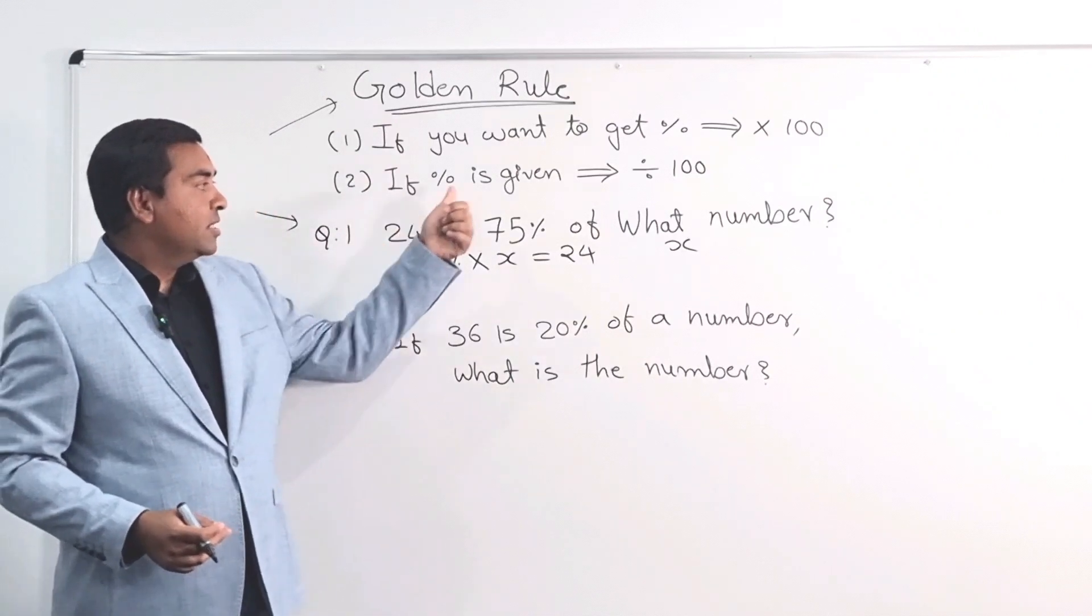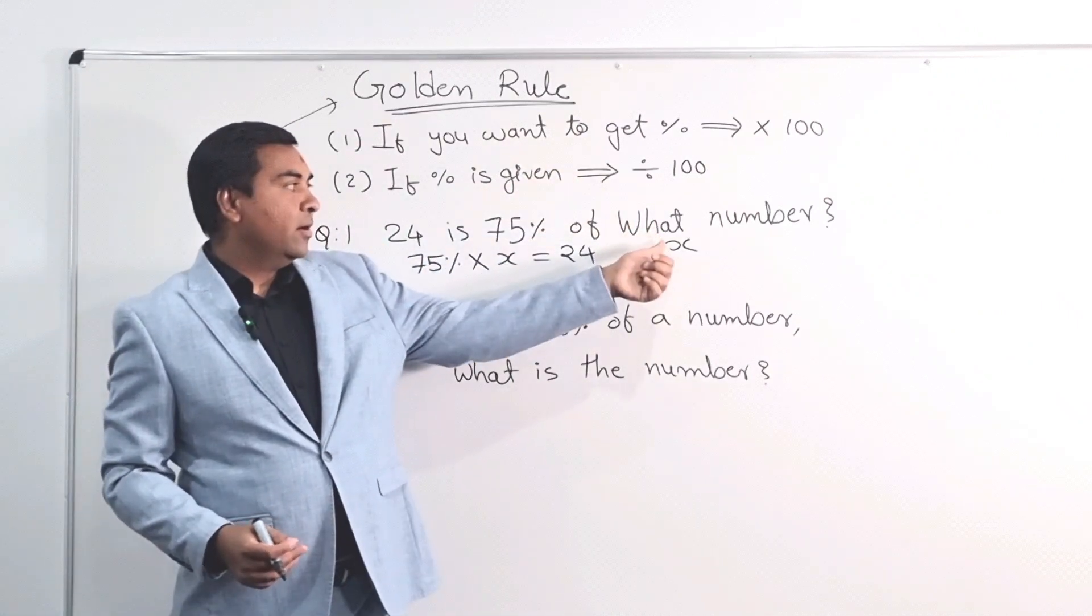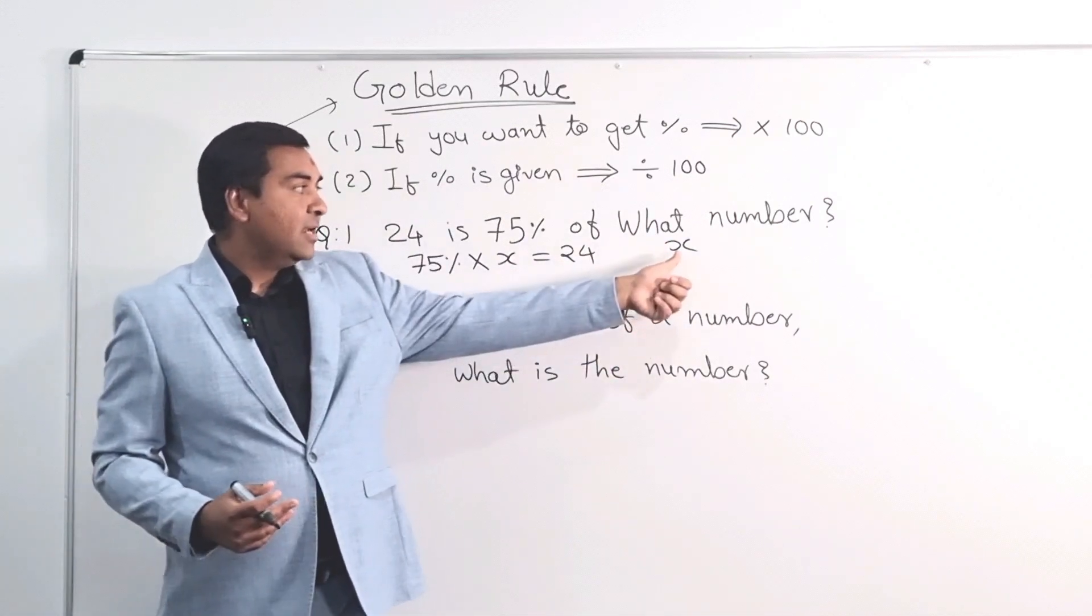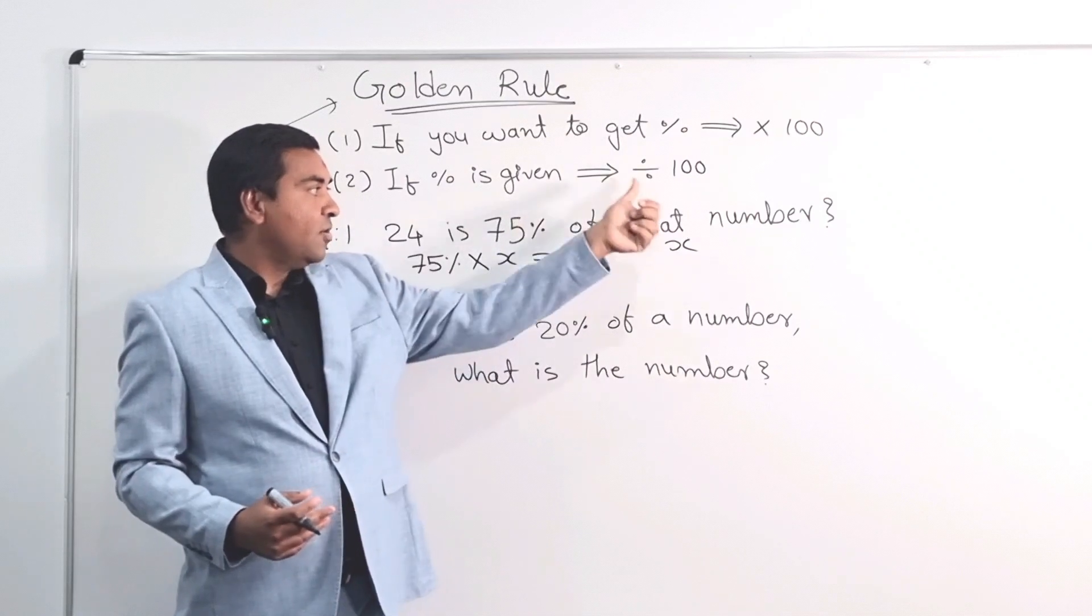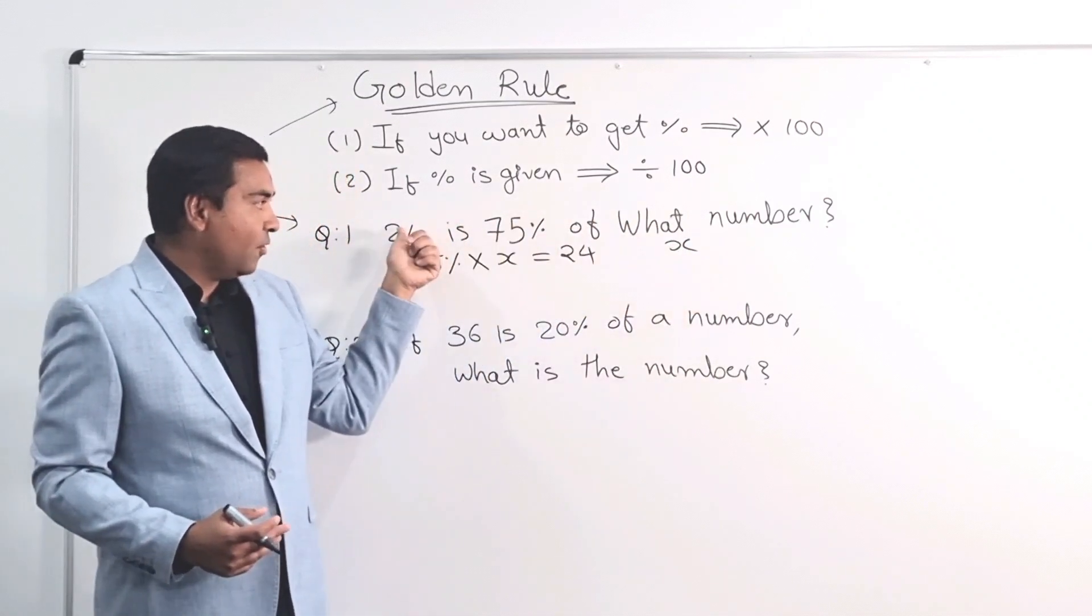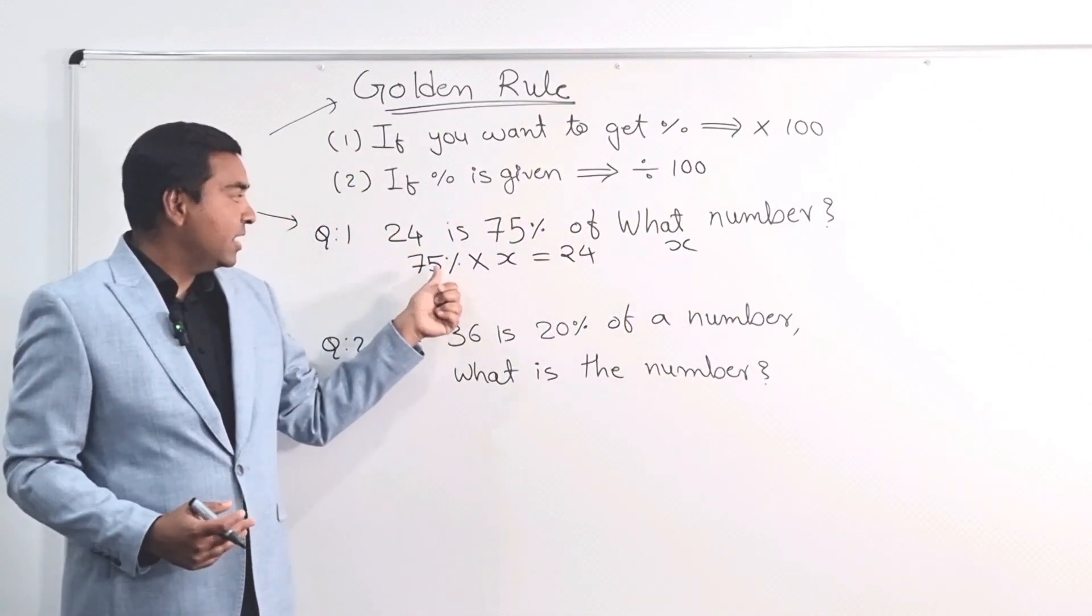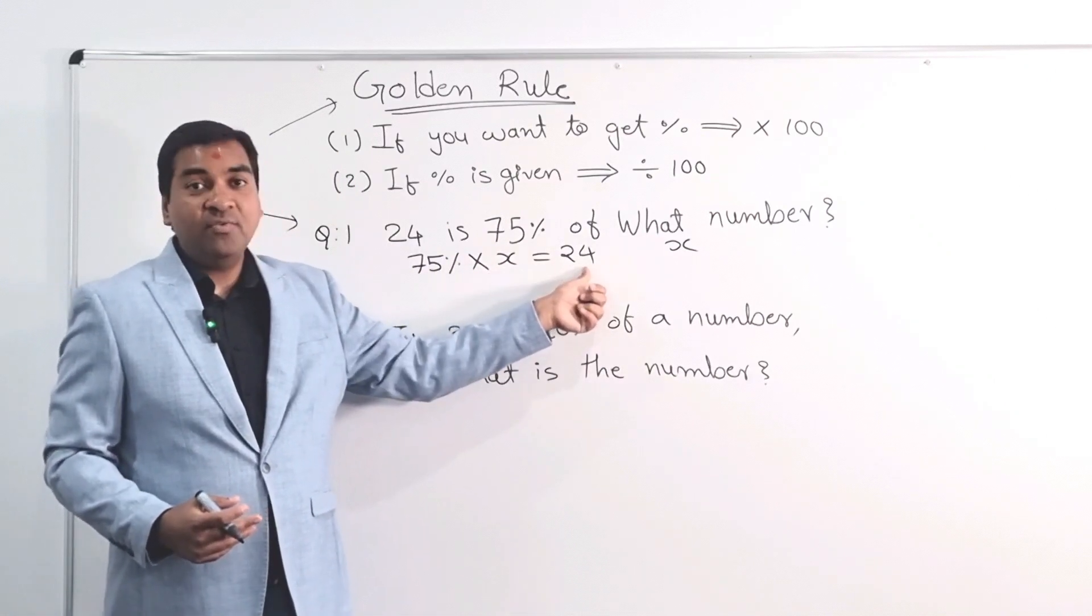So 24 is 75% of what number? I don't know the number. So I'm taking that number is X. So 75% of X is 24. That's why 75% times X equal to 24.